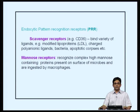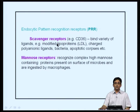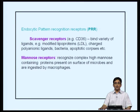There are other types of pattern recognition receptors; two important ones are endocytic receptors. These do not signal by themselves — they are endocytic, meaning they bind to complexes and internalize and clear off these bound ligands. One important type is scavenger receptors, which bind to modified lipoproteins such as LDL important in cholesterol transport. They also bind to charged polyanionic ligands, bacteria, and apoptotic corpses. This is important because when there is increased cell death, you want to remove dead cells, and scavenger receptors play an important role. There are also mannose receptors on macrophages that recognize high-mannose-containing proteins present on the surface of microbes, which are then ingested by macrophages.